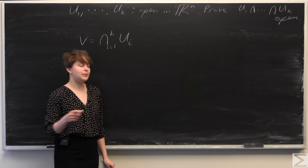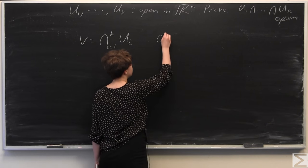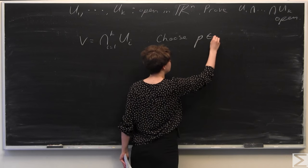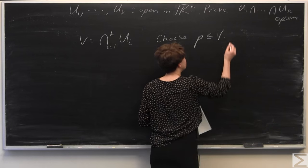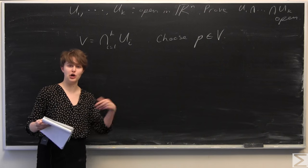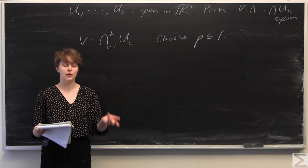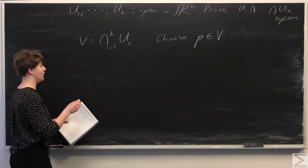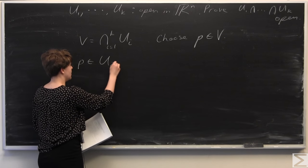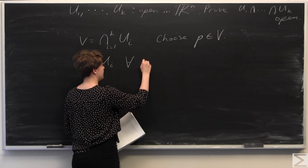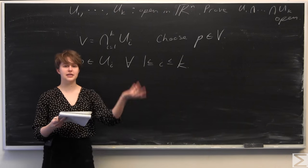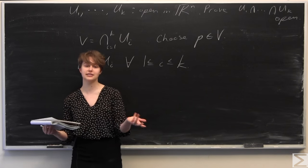We're going to go ahead and choose some point p in V. Since V is the intersection — by definition the overlap of all of the open sets — we know that p is in fact in all of the open sets ui, for all i between 1 and k. So this just means that point p is in fact inside all of these open sets.